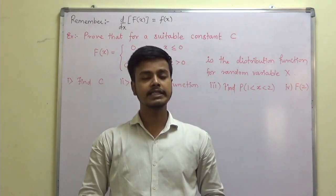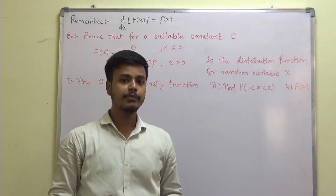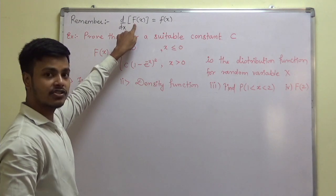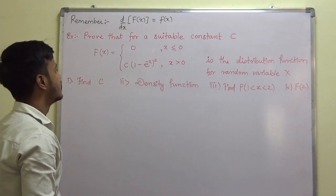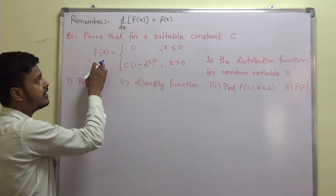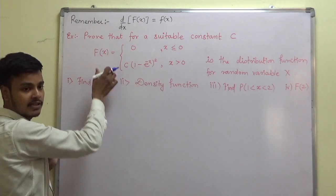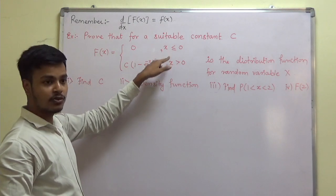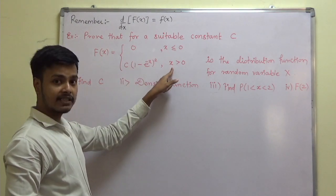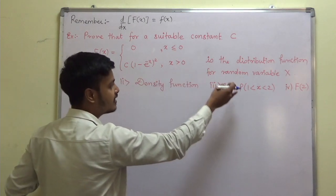Hello everyone, welcome to this learning video where we are going to discuss a problem on continuous random variable, making use of the relation between the distribution function and the probability density function. The problem says: for a suitable constant C, we are given a distribution function capital F of x. We have to find out the constant C, the density function, and so on.